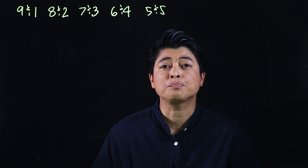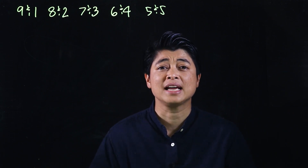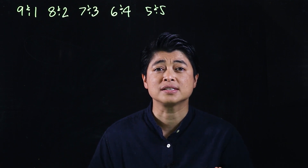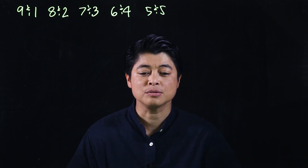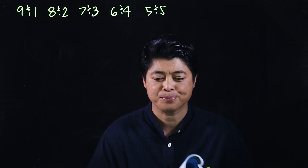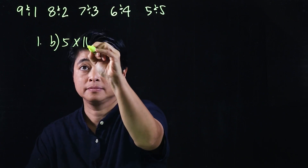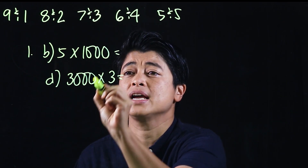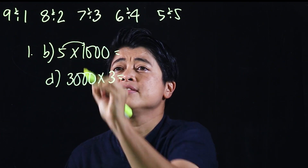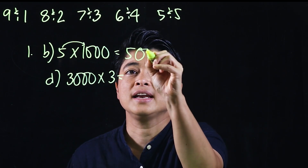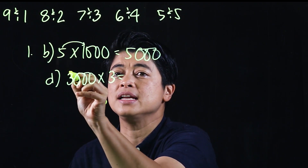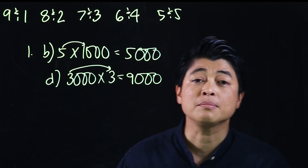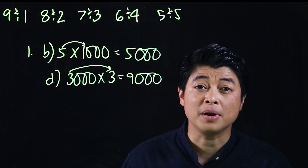When problems have numbers ending with zero, we cover the zeros, multiply the other numbers first, and then add the zeros at the end. For example, five times one thousand is five thousand — multiply five and one to get five, then add the three zeros. Similarly, three times three thousand is nine thousand — three times three is nine, then add the three zeros.